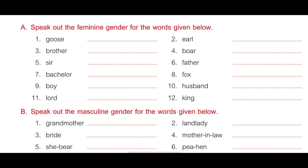Fifth, sir — answer is madam, M-A-D-A-M. Sixth, father — answer is mother, M-O-T-H-E-R. Seventh, bachelor — answer is spinster, S-P-I-N-S-T-E-R. Eighth, fox — answer is vixen, V-I-X-E-N. Ninth, boy — answer is girl, G-I-R-L.